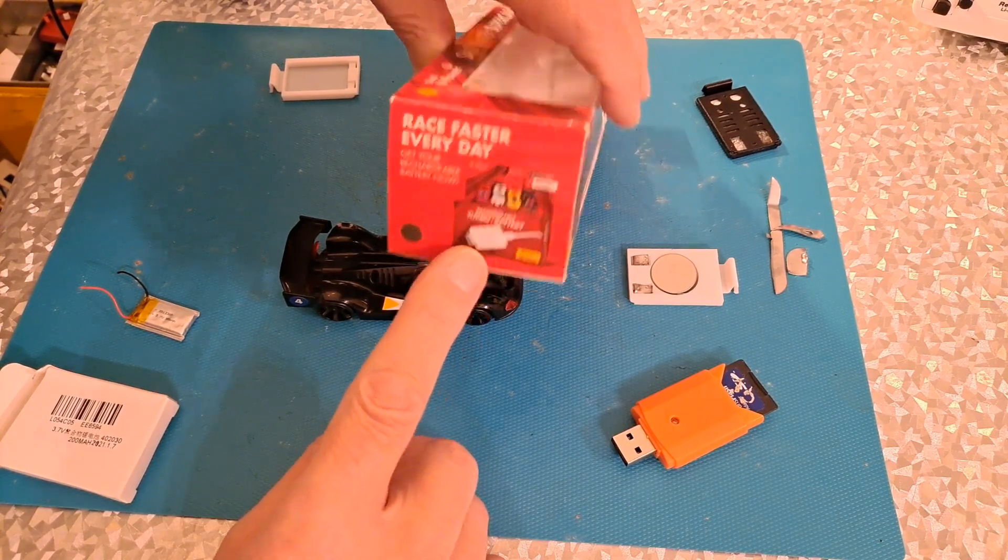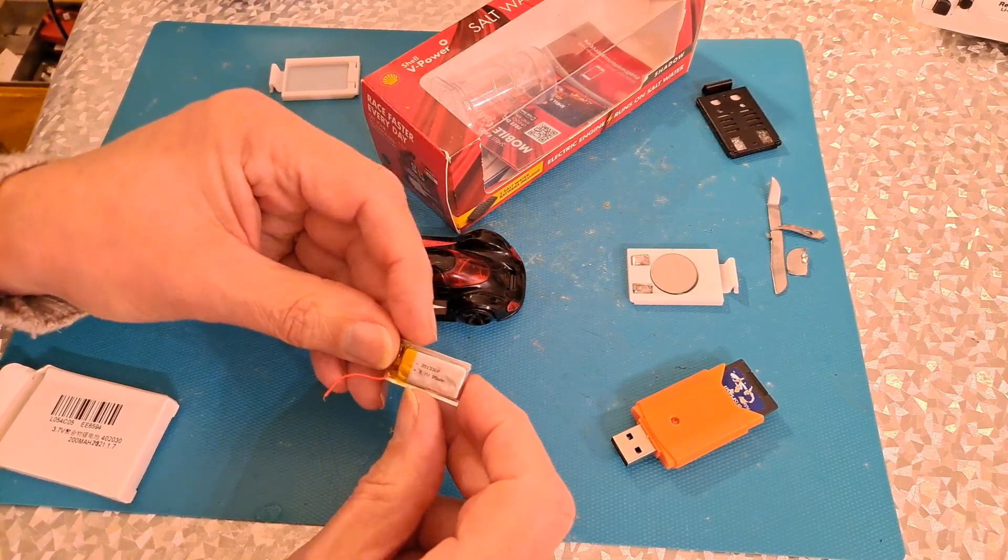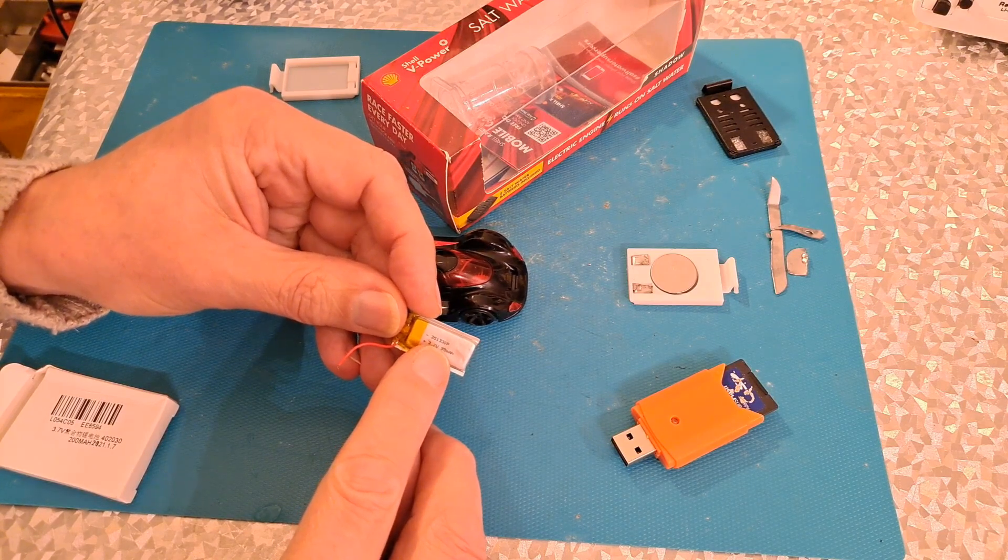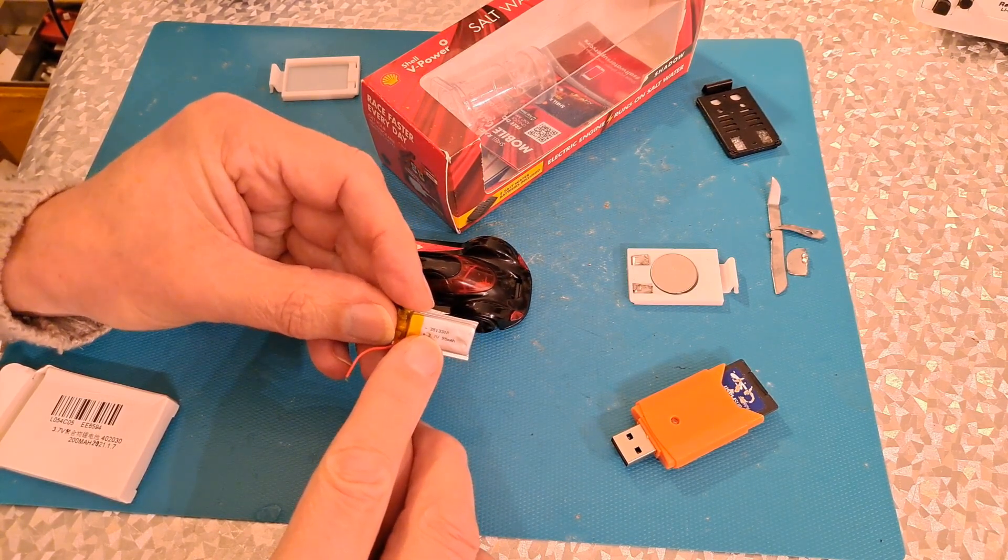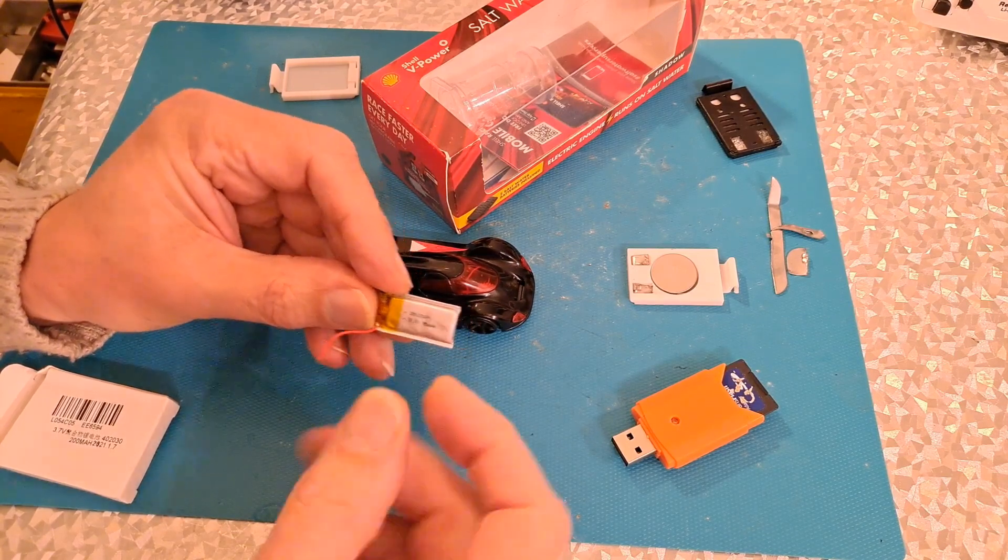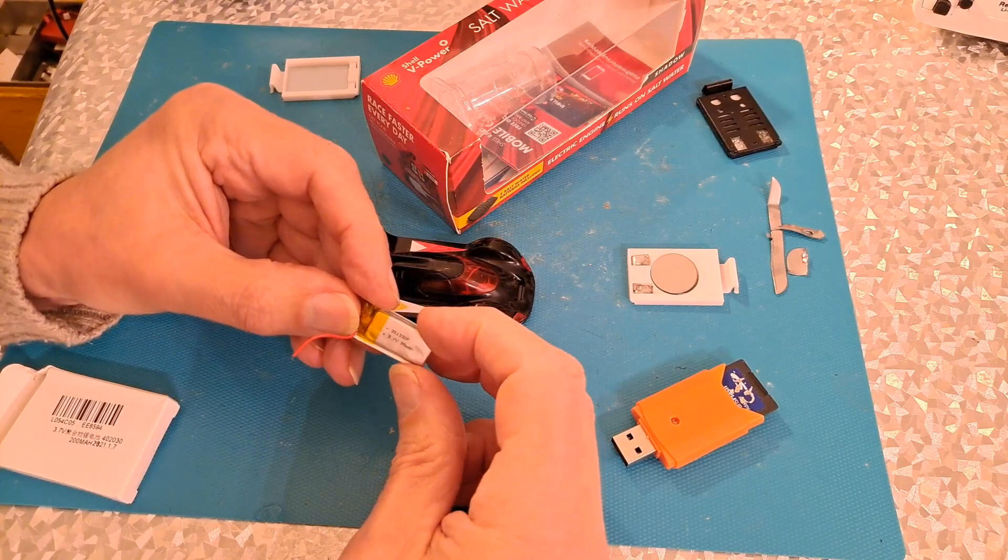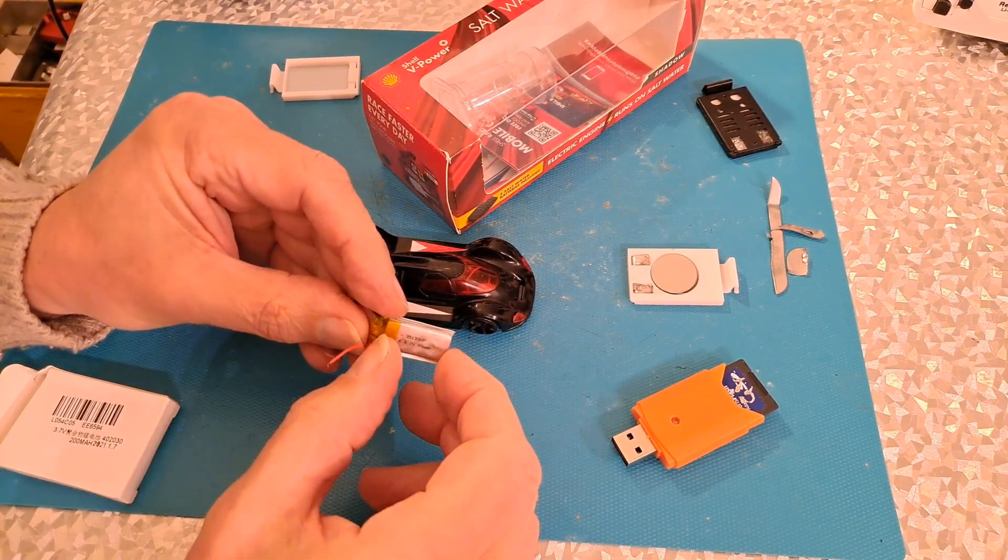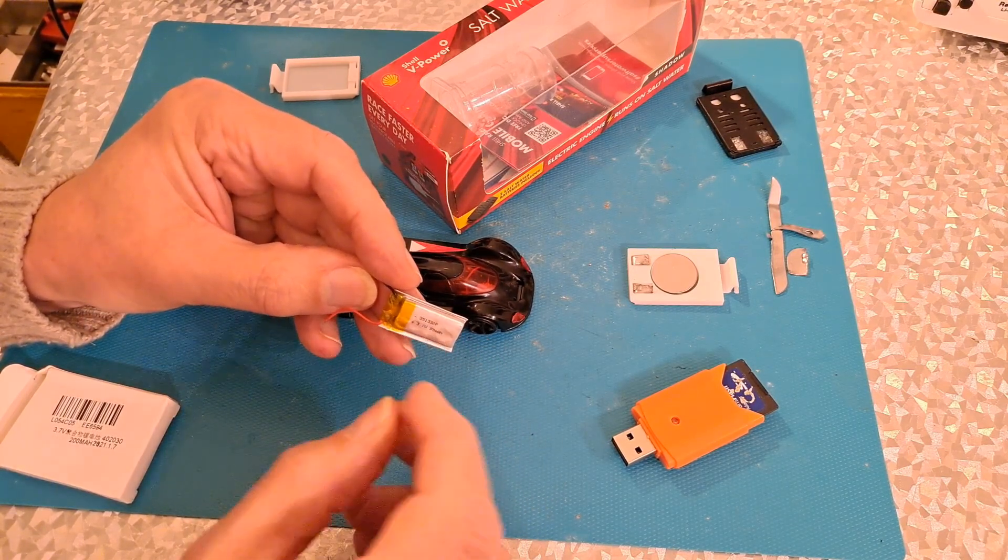Now I had a look at what I've got. I do have a very small LiPo battery there. That's a 351330. 35 is the thickness 3.5 millimeters thick. 13 will be the 13 millimeters across there and 30 will be 30 millimeters long. So it's thickness width length.